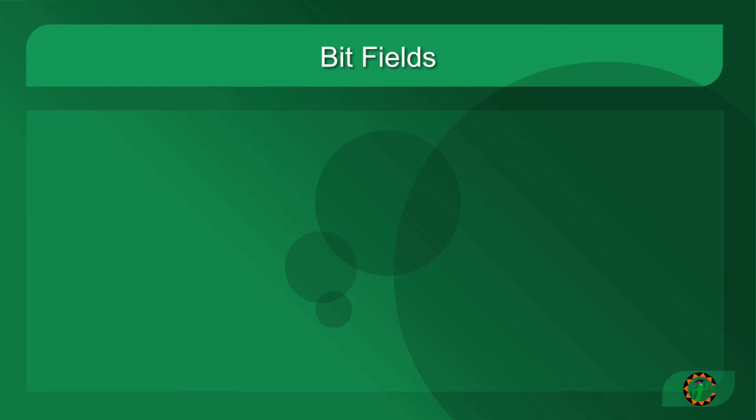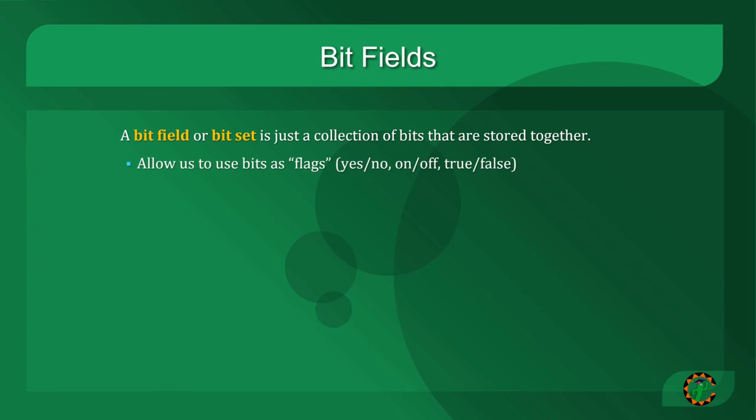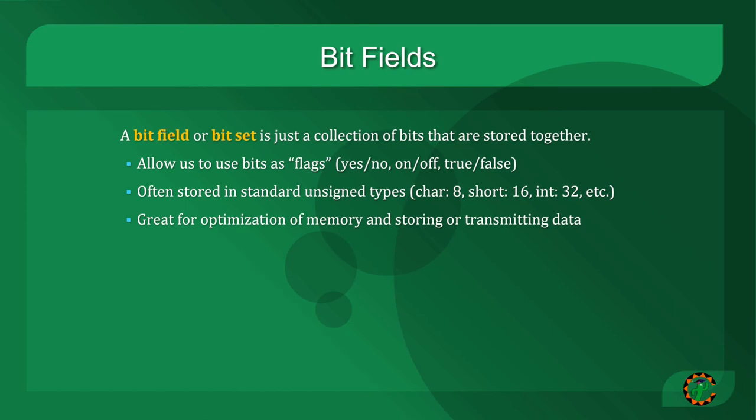Now you might be asking yourself, how is this actually useful in practice? If you've ever worked with binary data, for example from files, you may already be seeing some implications. But the usefulness of this kind of approach goes beyond just binary data storage. One of the more common approaches is the use of what we call bit fields. A bit field, or a bitset as it's sometimes called, is just a collection of bits that are stored together. The purpose is to allow us to use bits as flags. They represent a yes or no value, an on or off value, or a true or false value. These are often stored as unsigned types. An unsigned character is 8 bits, typically an unsigned short is 16 bits, an unsigned integer is 32 bits, and so on, but this depends on the architecture. Bit fields are great for optimizing memory and storing or transmitting data. They allow us to compress a lot of information into a very small space, effectively cutting the memory use to around one eighth compared to a typical Boolean representation.